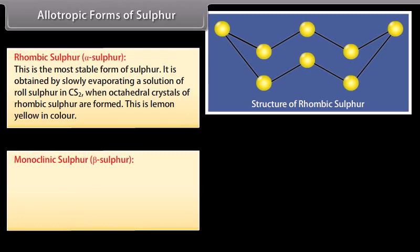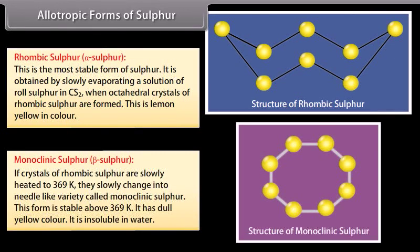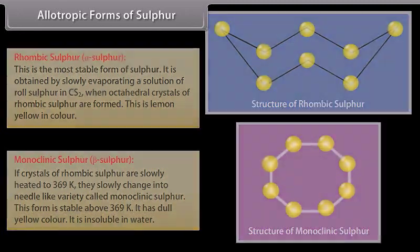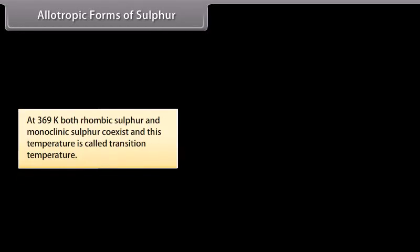Monoclinic sulphur: If crystals of rhombic sulphur are slowly heated to 369K, they slowly change into needle-like variety called monoclinic sulphur. This form is stable above 369K. It has dull yellow colour. It is insoluble in water. At 369K, both rhombic sulphur and monoclinic sulphur co-exist and this temperature is called transition temperature.